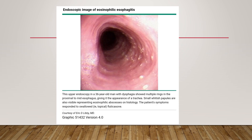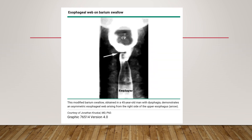This image shows eosinophilic esophagitis in the endoscopic view of a 36-year-old male with dysphagia. We can clearly see stacked multiple rings and whitish papules which are eosinophilic microabscesses. These stacked rings give the appearance resembling a trachea because of the narrowed lumen — this is a typical endoscopic finding of eosinophilic esophagitis.